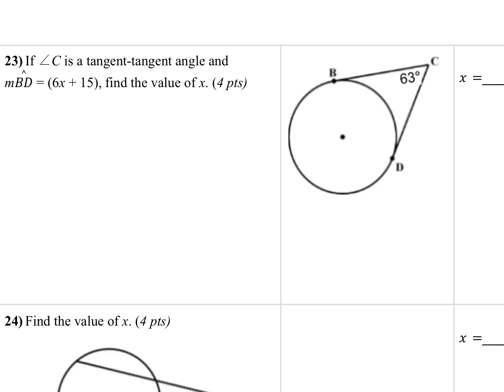All right, this is a tangent-tangent angle. So the tangent, remember, just barely touches the circle. So here is our tangent, and here is our other tangent. That vertex is outside, so typically we would do half the difference because the vertex is outside.